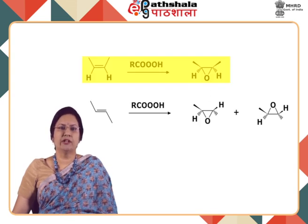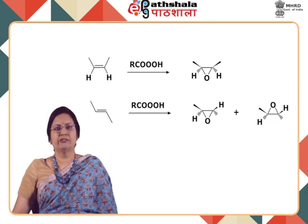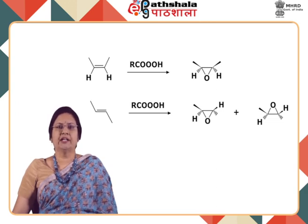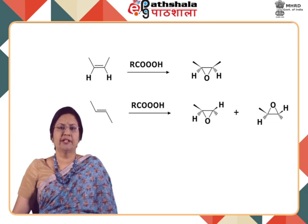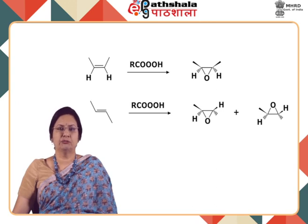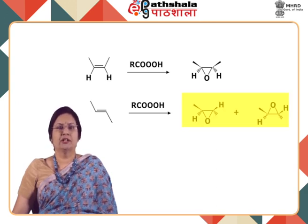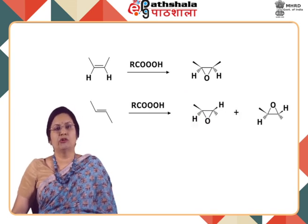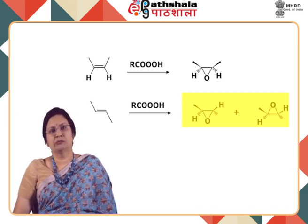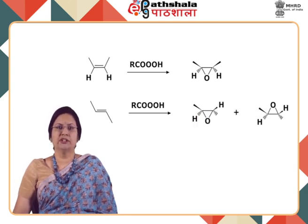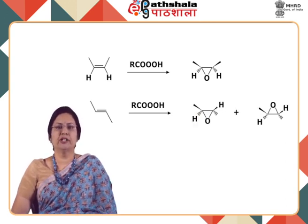On the other hand, when you start from a trans alkene and treat it with the per acid, the epoxide is formed from the same side without any change in stereochemistry, giving the trans epoxide from a trans alkene. Notice that in this case there will be two isomers formed where the epoxide can be attacked from one side of the molecule or from the other side, and you are getting an enantiomeric mixture.